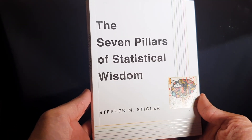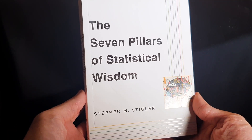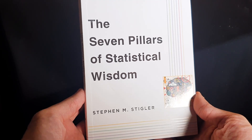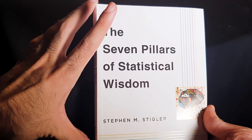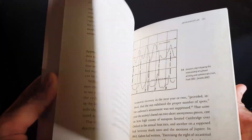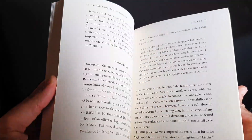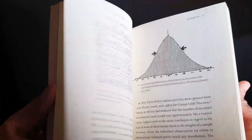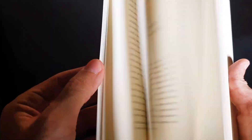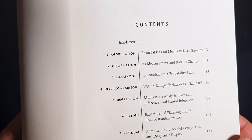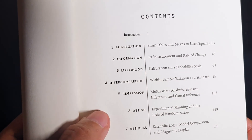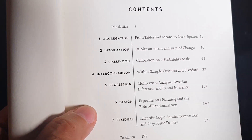This is The Seven Pillars of Statistical Wisdom by Stephen Stigler. It's a very small book and very easy to go through. There are a bunch of visuals, and it has a really good storytelling style. So let's get into the seven pillars that a lot of modern statistics is built on top of.